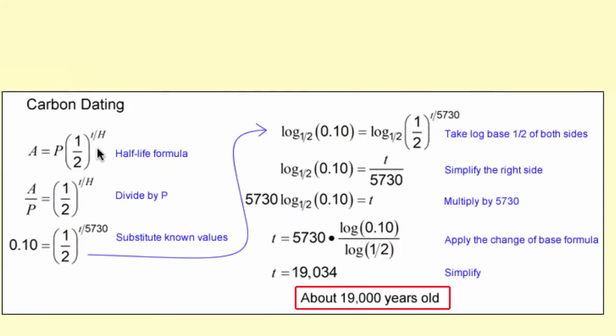If you're trying to solve for the amount of time that has passed based on the measurements of the initial amount and current amount, you have to use logarithms. The algebra is pretty straightforward though. If there's 10% carbon-14 remaining, the item is about 19,000 years old.